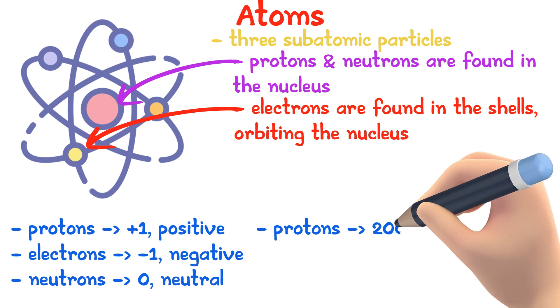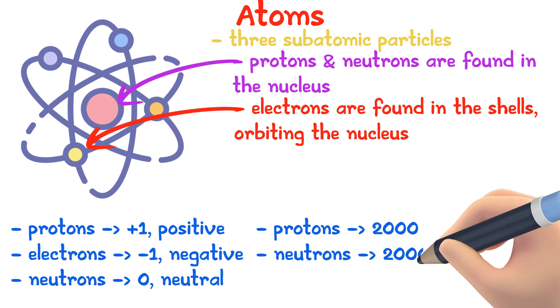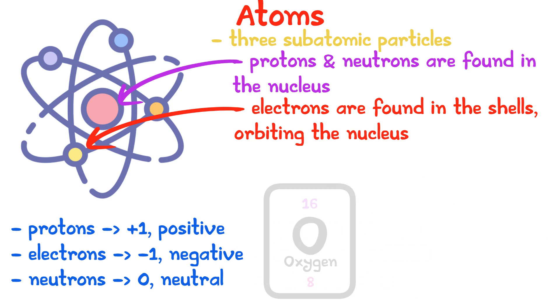Protons and neutrons have a relative mass of 2,000 if electrons have a relative mass of 1. This is the atomic notation of the oxygen element.